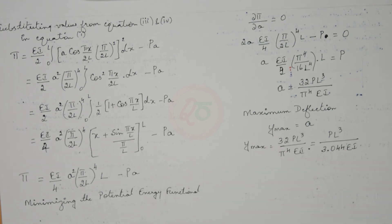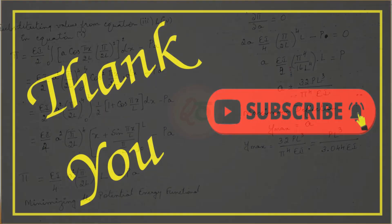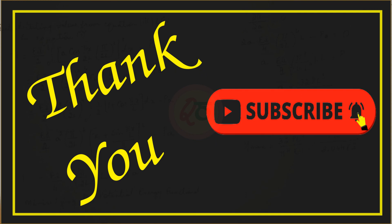Thank you for watching. You can also try this solution using a polynomial displacement function — keep the order at a minimum of third degree. As mentioned in previous sessions, trigonometric approximations give better results for beams, which is why we used them here. In the next session, we will look at a cantilever beam subjected to a uniformly distributed load. Until then, take care.